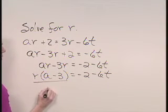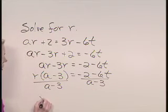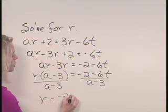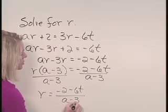And finally, we can divide both sides by A minus 3 to get R is equal to negative 2 minus 6T over A minus 3.